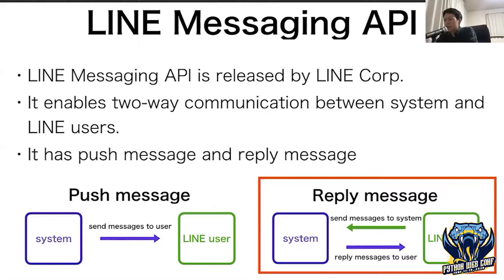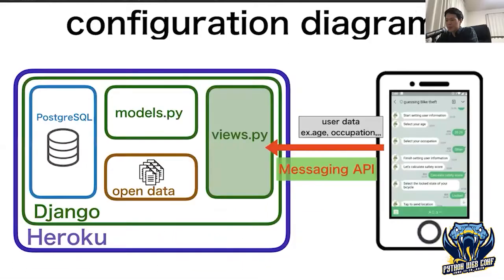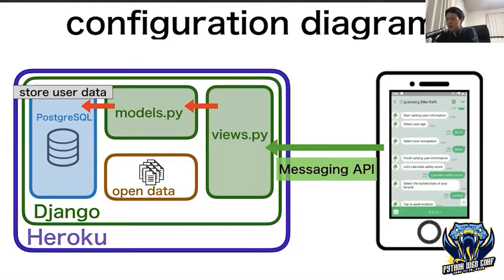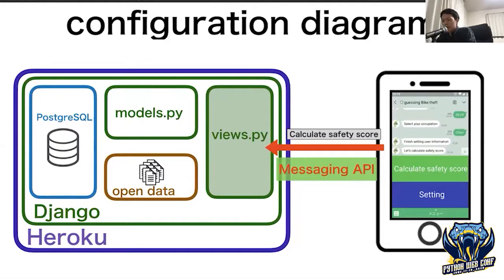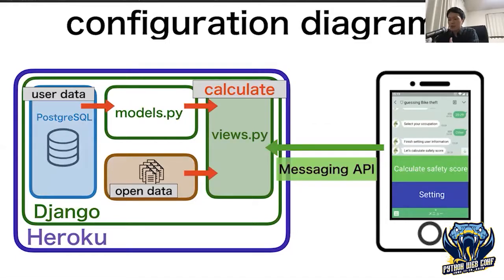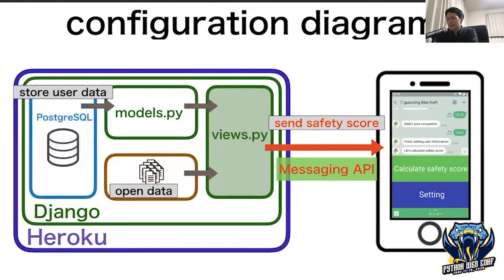My system uses reply message. Returning to the configuration diagram: Django views get user data using the Messaging API, and the user data is stored in the database by a model. When ordered to calculate the safety score, views.py calculates it from user data and open data of stolen people to predict safety. Then the calculated safety score is sent to the user via the Messaging API.